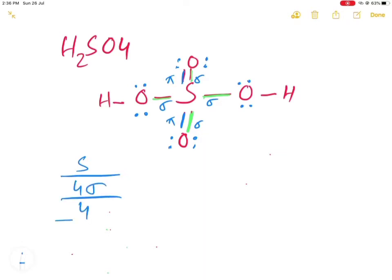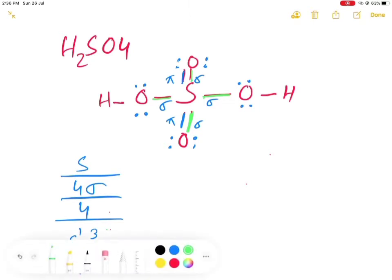Taking 4 sigma bonds: S will take 1, then P will take 3 (4 minus 1 = 3), and 1 plus 3 equals 4 — so the hybridization is sp3. Sulfur is sp3 hybridized.